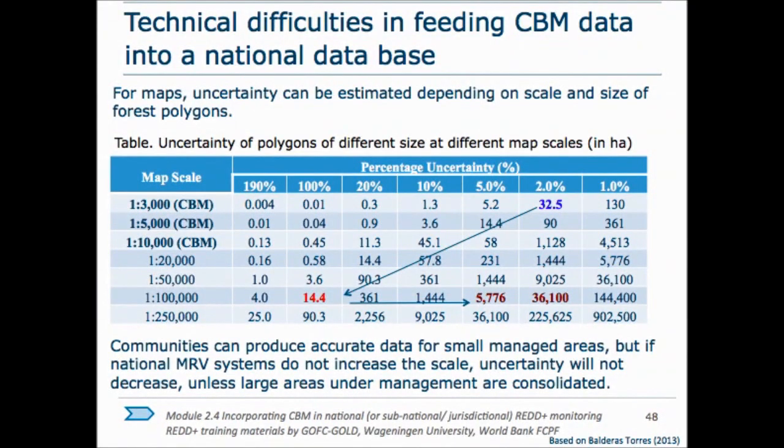To make better use of locally gathered data, it is very important first that the scale of maps for national-level activity data increases as much as possible, and second that the area under improved management by local communities includes relatively large polygons. If this is not the case, the data will still have relatively high levels of uncertainty.